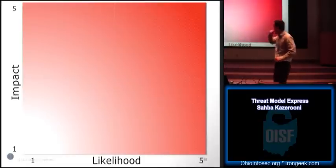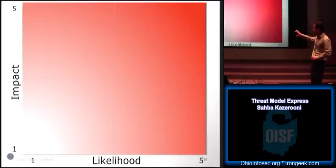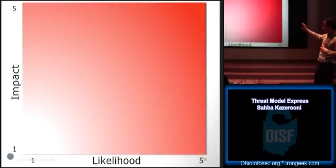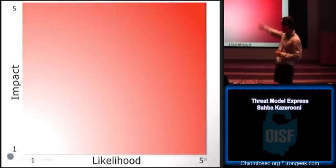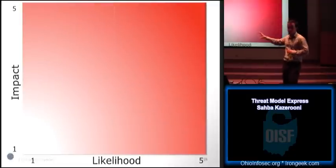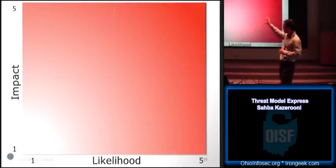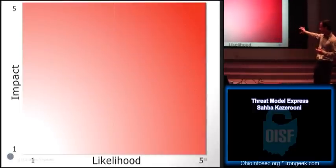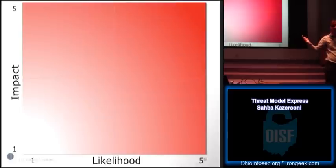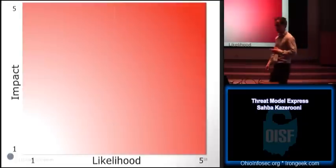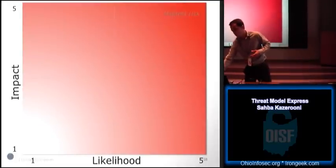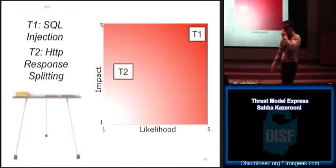This is our risk chart. I usually divide it in quadrants — for the sake of keeping things time-boxed, you don't want to get stuck in discussions of 'is it a three or four?' Just say: from an impact scale, is it in the top half or the bottom half? Is this going to have a huge impact to our company or not so much? And you do the same for likelihood. You pick the quadrant and you're left with four quadrants, then you start mapping your abuse cases to the risk chart. This is done with everybody in the room and there's often quite a bit of discussion.